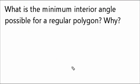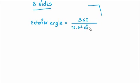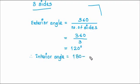What is the minimum interior angle possible for a regular polygon and why? The smallest polygon we can have is three sides, because we cannot form a closed figure with two sides. For a three-sided polygon, the exterior angle is 120 degrees. Therefore, the interior angle is 180 minus 120, which gives 60 degrees. So, the smallest interior angle possible for a regular polygon is 60 degrees, and the largest exterior angle possible is 120 degrees.